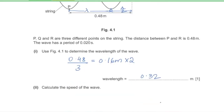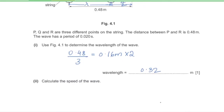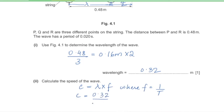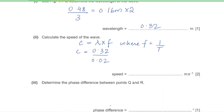Part 2: calculate the speed of the wave. Speed = wavelength × frequency = wavelength / period = 0.32 / 0.02 = 16 m/s.